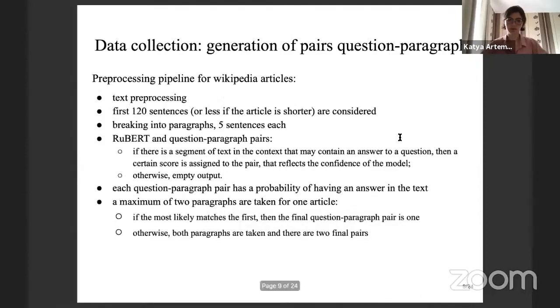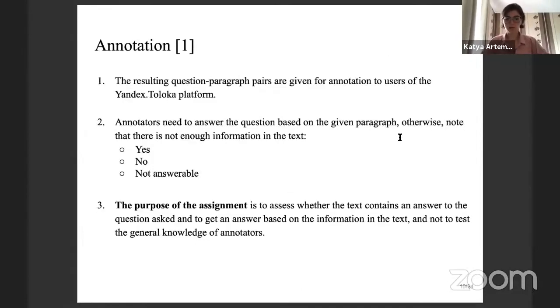This slide explains the way we pre-processed Wikipedia articles, but I don't think we need to stop here and pay a lot of attention to this because everyone has worked with Wikipedia and knows how to pre-process Wikipedia. The second step of crowdsourcing annotation was the following.